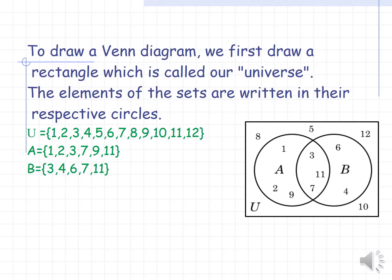Elements 3, 7, and 11 are common to both sets, so we place them in the overlapping area.